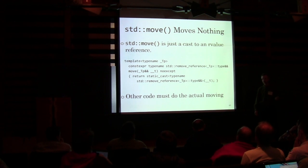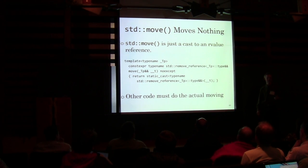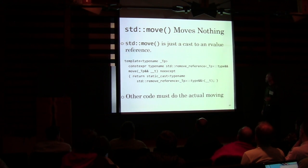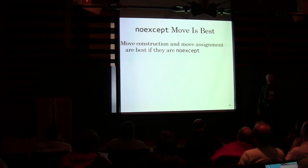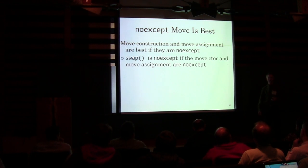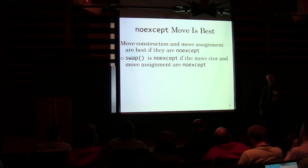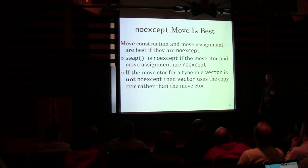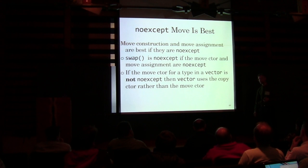If you can, when you make something that's movable, make it noexcept movable. Swap, if it's got noexcept moves, becomes noexcept. And it also helps with vector — vectors get used a lot. So if you can make your move noexcept, do that.